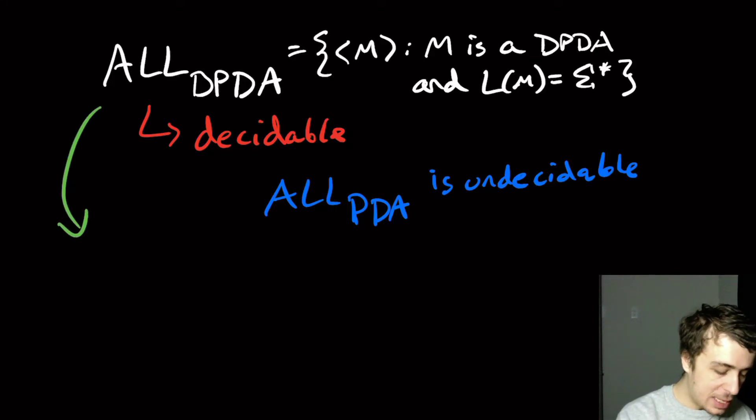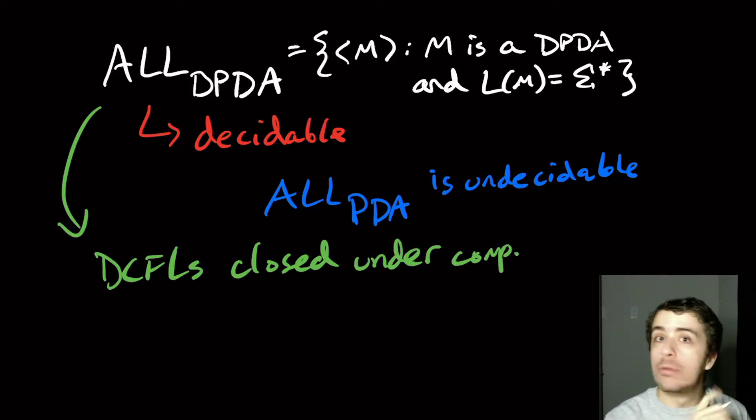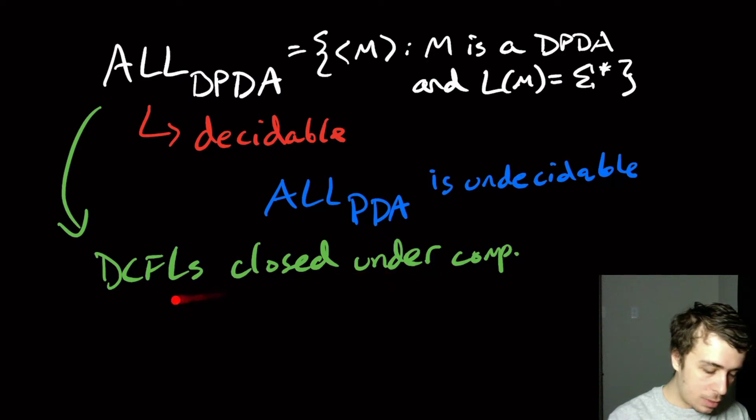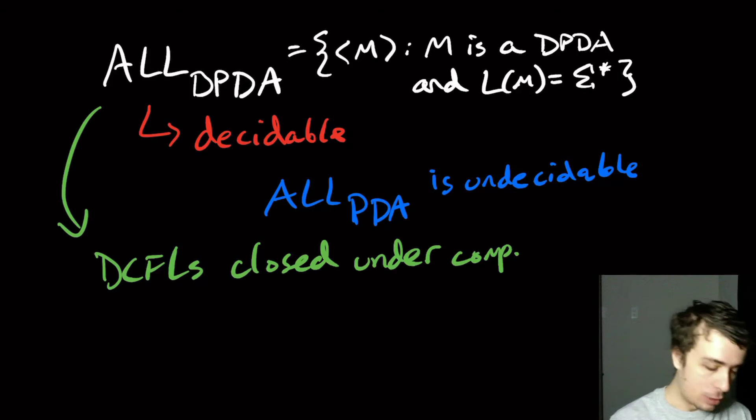So, the idea is that DCFLs are closed under complement. And we've done several videos on that. It's in the intro theory series on the channel. But the idea here is, well, the answer of whether L of M is equal to sigma star is equivalent to asking whether that machine, if you complement it, will accept the empty language.